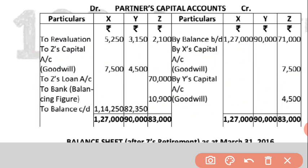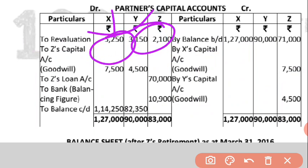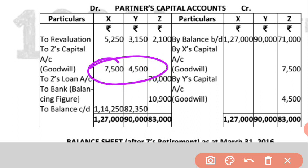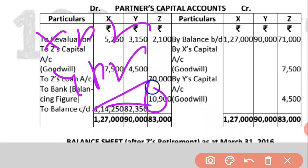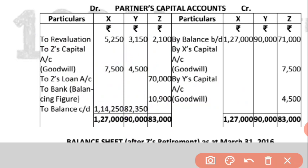X's capital gets 7,500 and Y's remaining share is 4,500. X and Y are gaining — they are getting Z's share — so in X and Y's columns the goodwill amount is written on the debit side. In Z's column, 'By Z Capital 12,000' is written on the credit side. So: X debited 7,500, Y debited 4,500, Z credited 12,000.